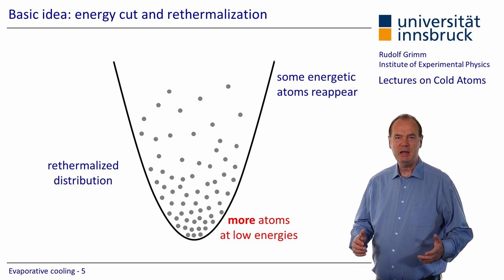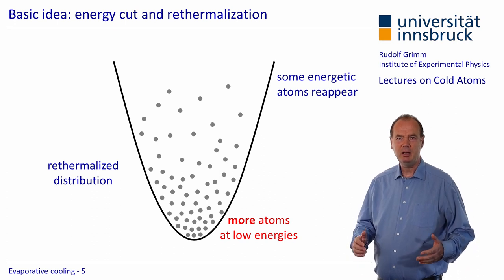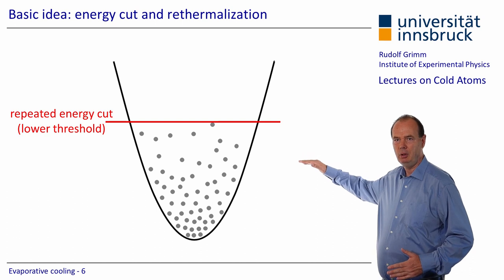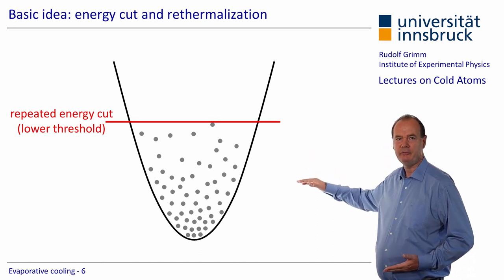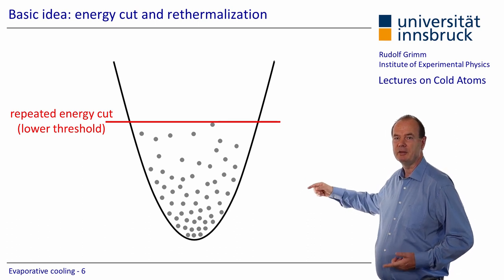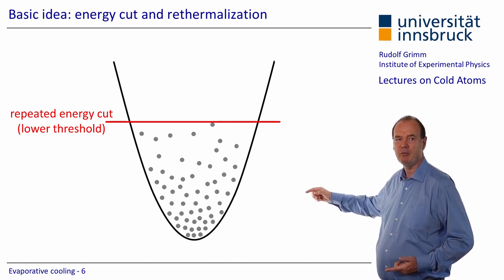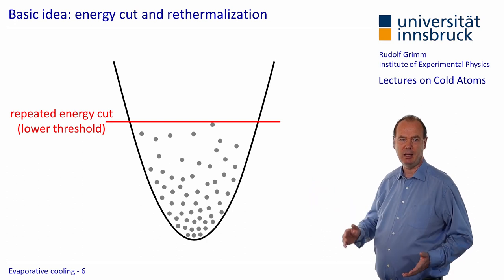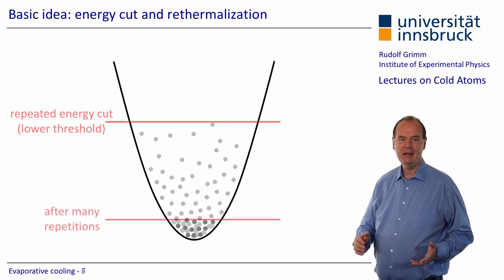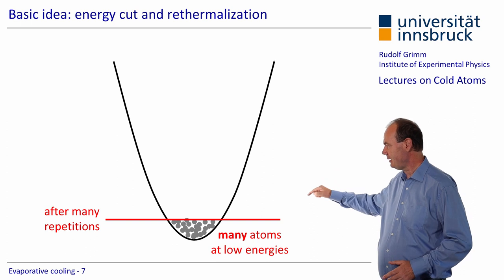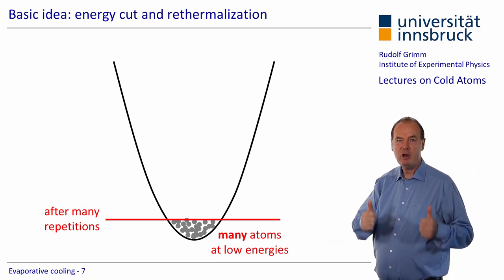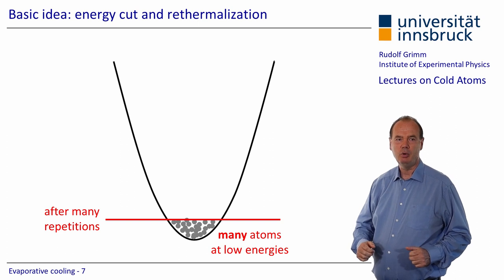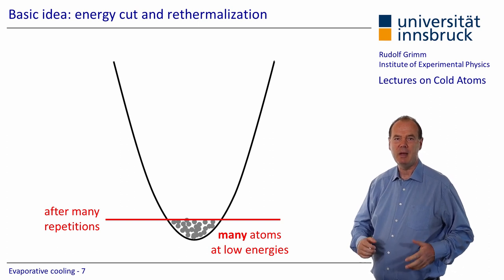Now we can repeat the procedure. We again apply an energy cut and this time we can lower the threshold a bit, since the sample is getting colder. We let the sample re-thermalize and we repeat everything many times. At the end we get many atoms at low energies. This is real phase-space cooling, which we need in many experiments.